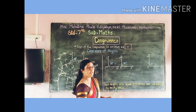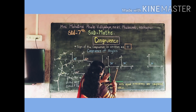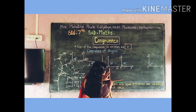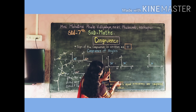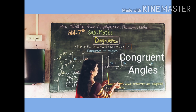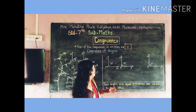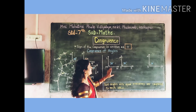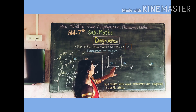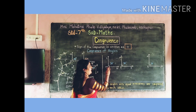Place these two angles one upon the other. They exactly coincide with each other. That means they are congruent angles. Congruence of angles does not depend upon the place or its size; it depends upon only its measures.